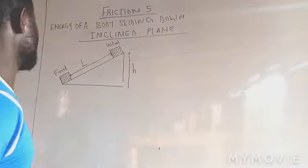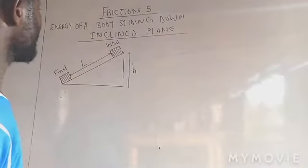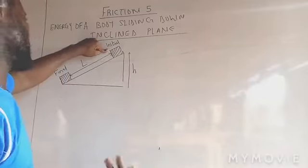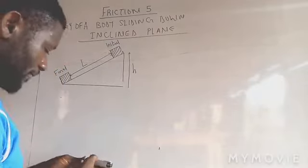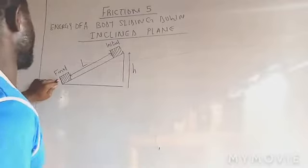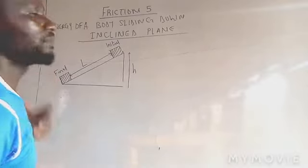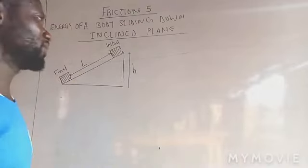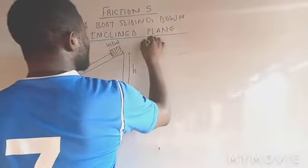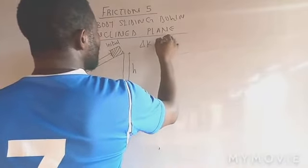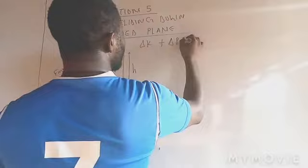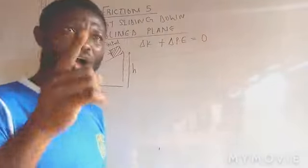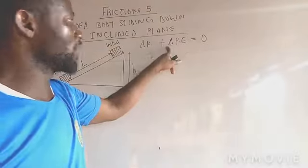So let us go into the work. Now at the initial position here kinetic energy is zero. At the final position here potential energy is zero. According to conservation of energy, change in kinetic energy plus change in potential energy equals zero. That is in the absence of friction.